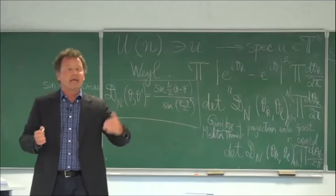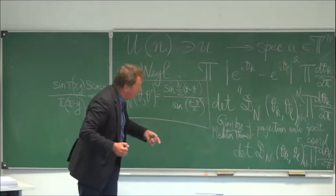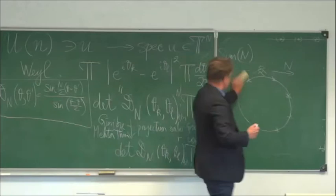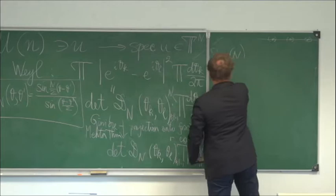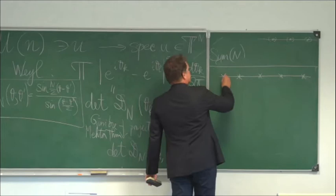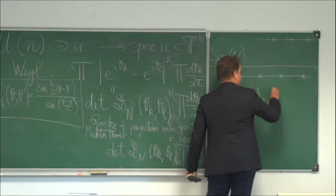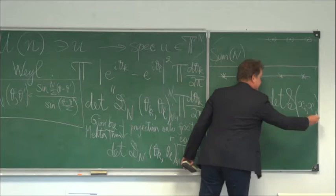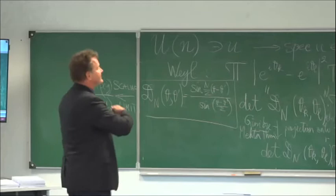This precise remark allows one to take the scaling limit and to consider the sine process on the space of infinite configurations. Under scaling, the circle becomes the line, giving a measure on the space of infinite subsets of the line without accumulation points — configurations on the line. The correlation functions are given by the determinantal formula, and the key point is this determinantal property.